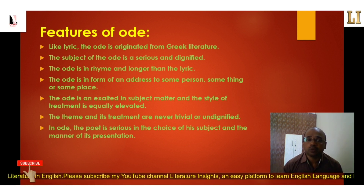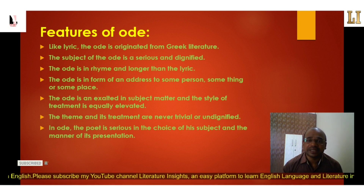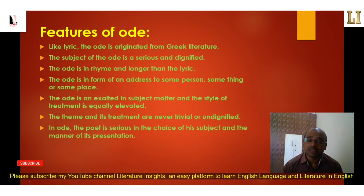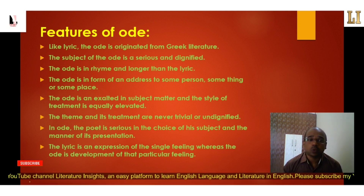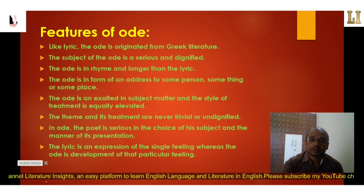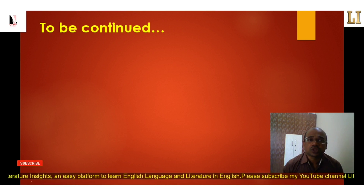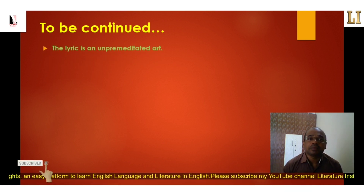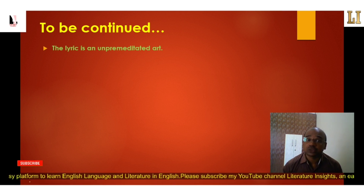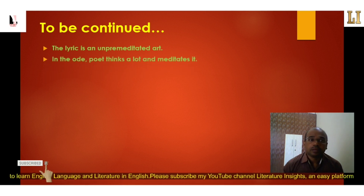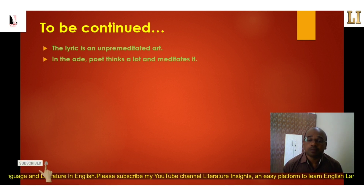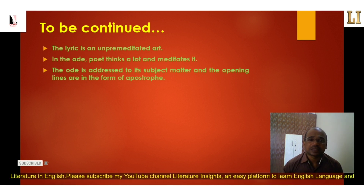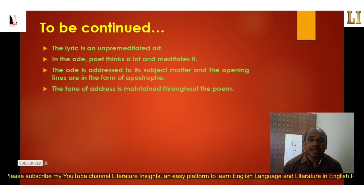The theme and its treatment are never trivial or undignified in an ode. The poet is serious in both the choice of subject and manner of presentation. The lyric is an expression of a single feeling or emotion, whereas the ode is a development of that particular emotion or feeling. Furthermore, the lyric is an unpremeditated art — unplanned before composition — but the ode is the opposite: the poet thinks, meditates, and plans extensively before composing.